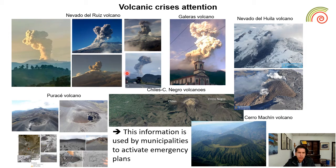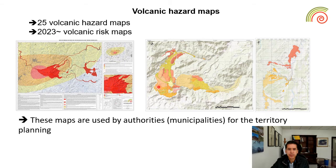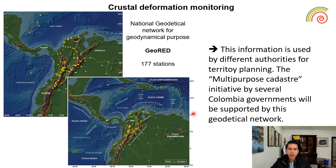We are also providing useful information for decision makers. We produce volcanic hazard maps with which authorities can plan in the territory. For crustal deformation, we have the Geo-Red network, which is used by different authorities for territory planning as well.